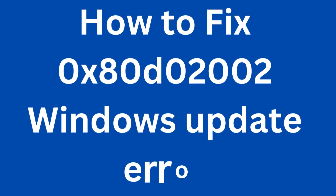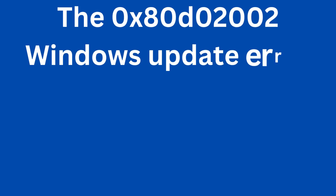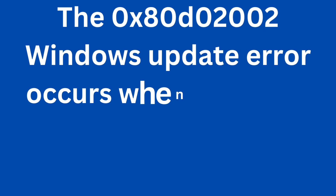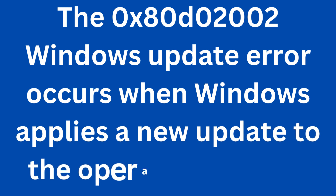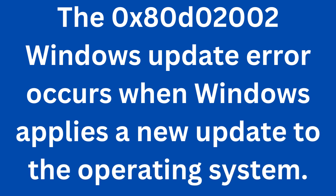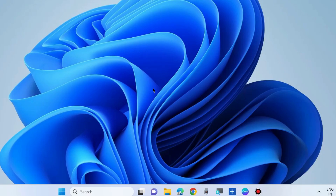Hello guys. How to fix the 0x80d02-002 Windows Update error code in Windows 10 and Windows 11. This Windows Update error occurs when Windows applies a new update to the operating system of Windows 10 and Windows 11. The first workaround to fix this Windows Update or download error code: